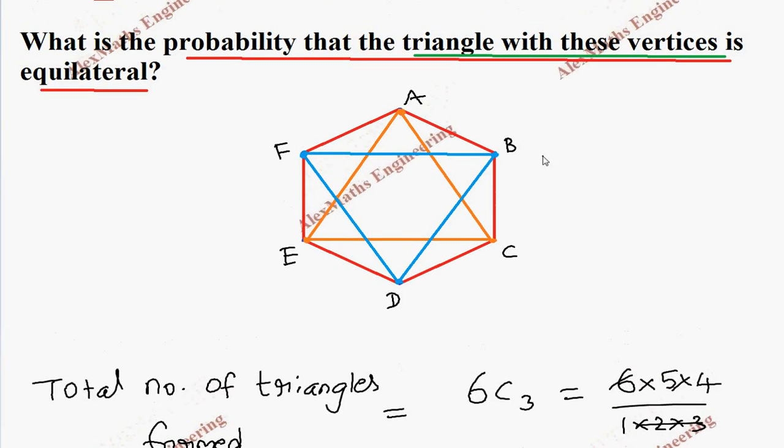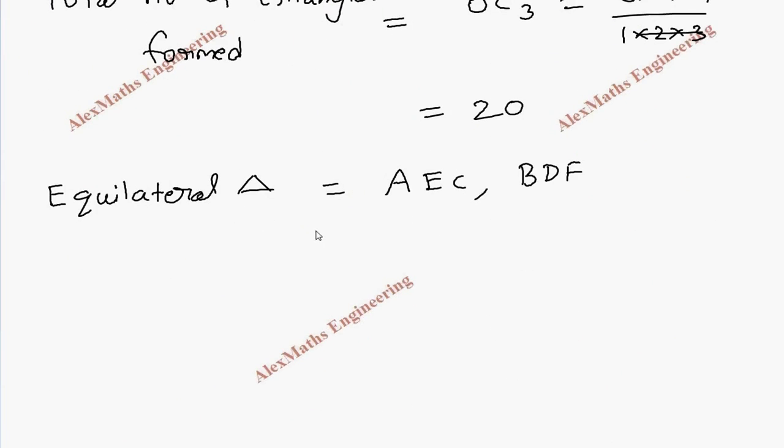Then, apart from that, if I choose any other, suppose if I choose C, A, E, which is already chosen. So if I choose any other 3 points which form an equilateral triangle, it will be from these 2 options alone. So it means the equilateral triangles are only A, E, C and B, D, F. Even A, E, C or E, C, A, all are same. Order doesn't matter. Only the triangle is important.